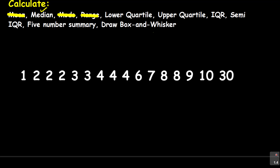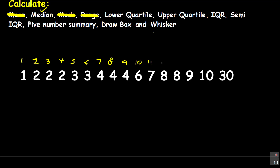How do you find the median? The median, as the word says, is the middle number — the center number. There are two ways of finding the median. The first one: let's use a simple approach. If I arrange this data and say this is number 1, number 2, number 3, number 4, number 5, number 6, number 7, 8, 9, 10, 11, 12, 13, 14, 15, and 16.